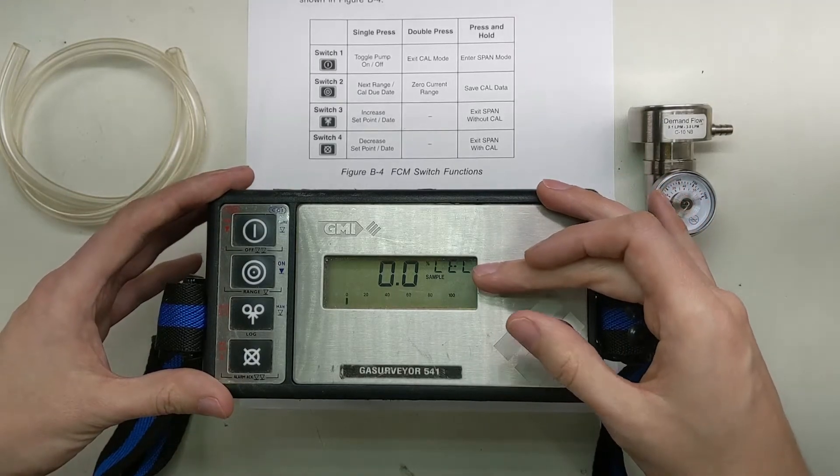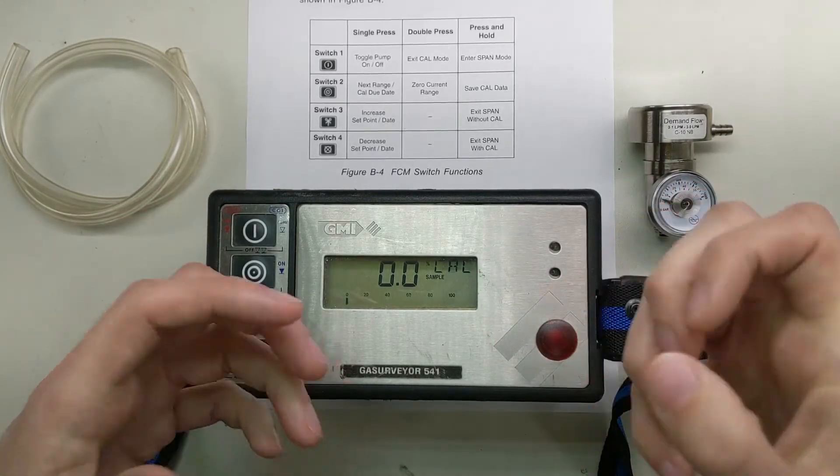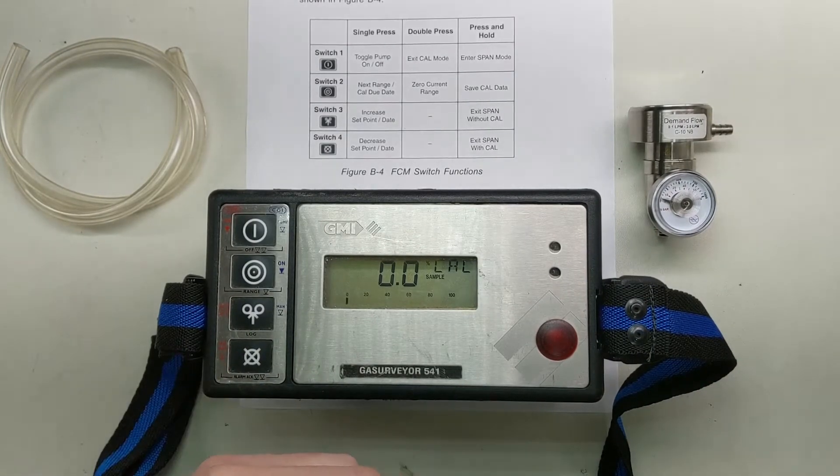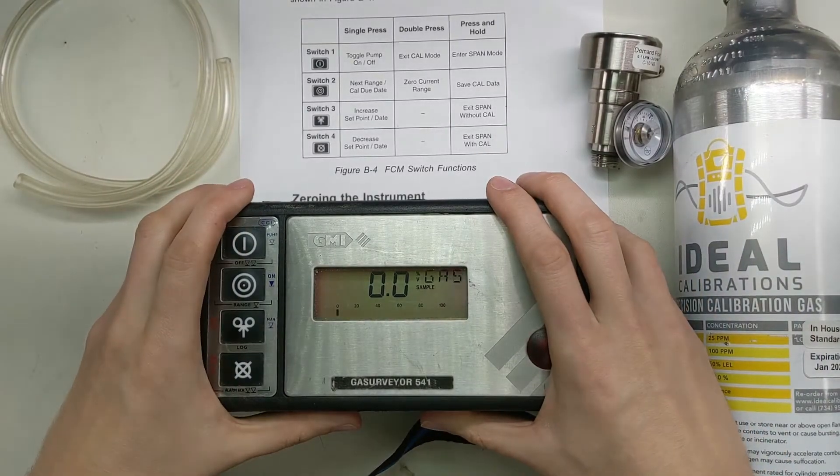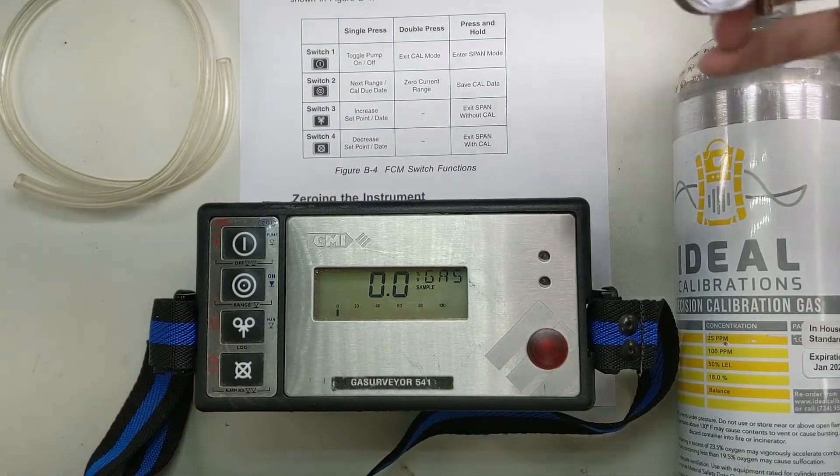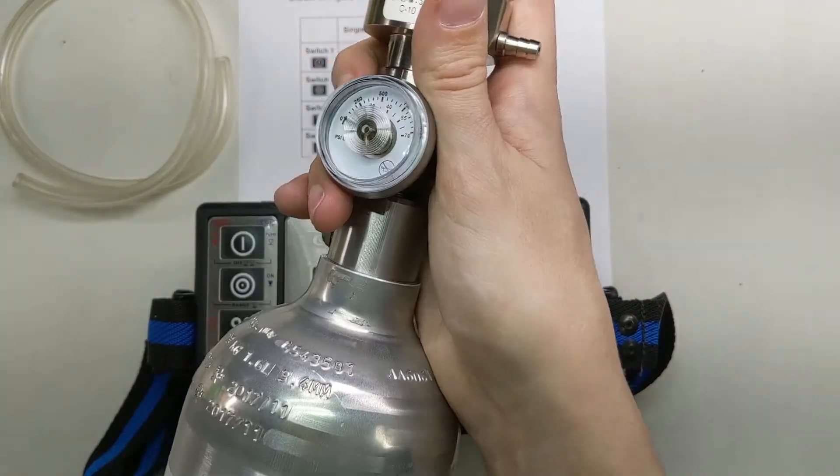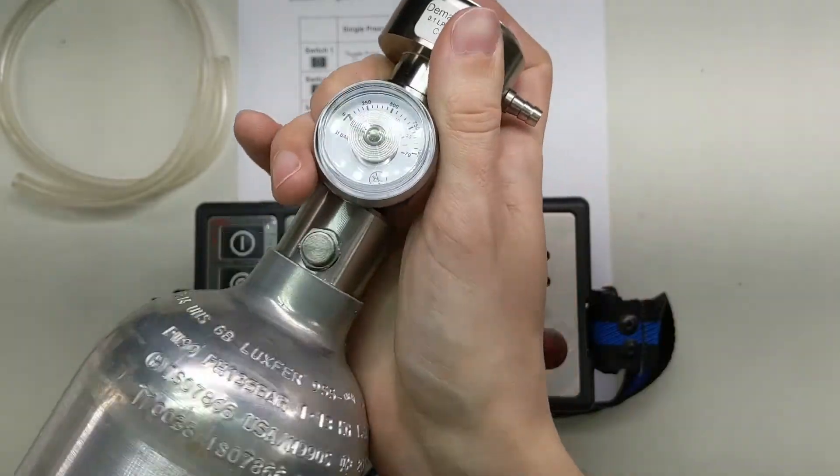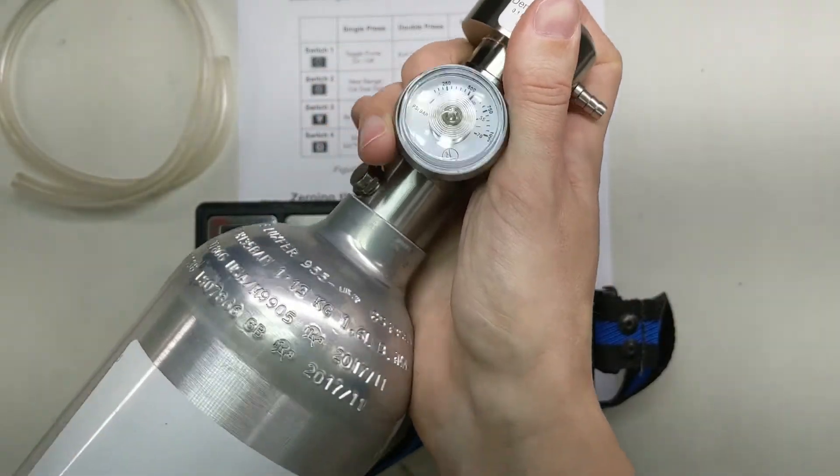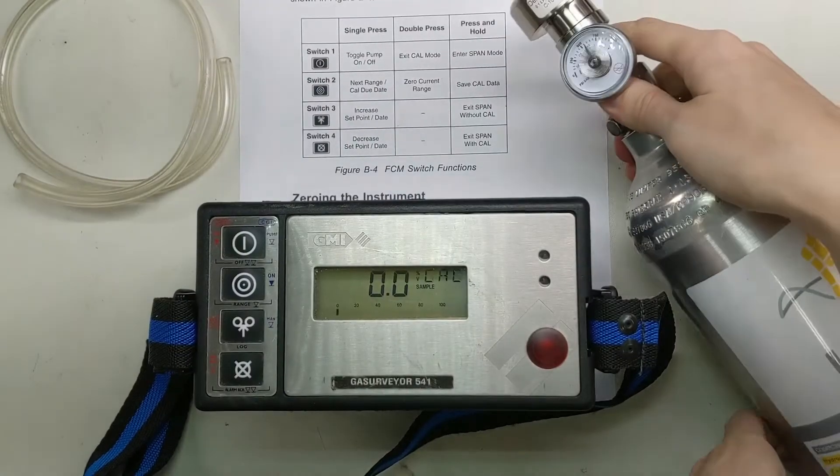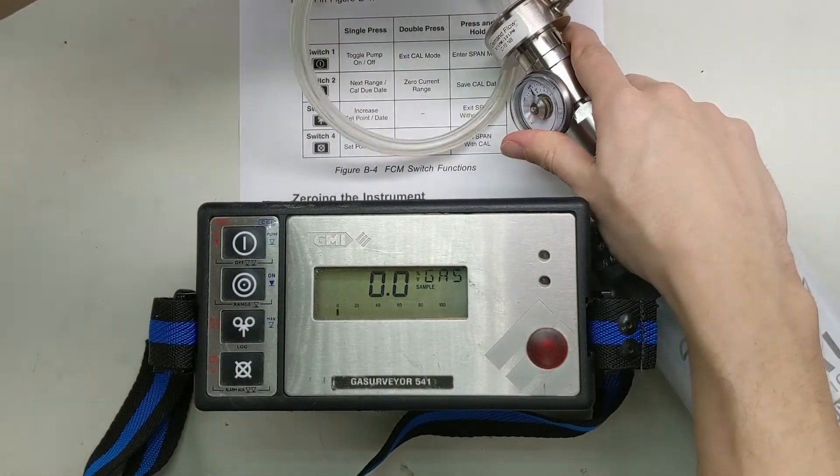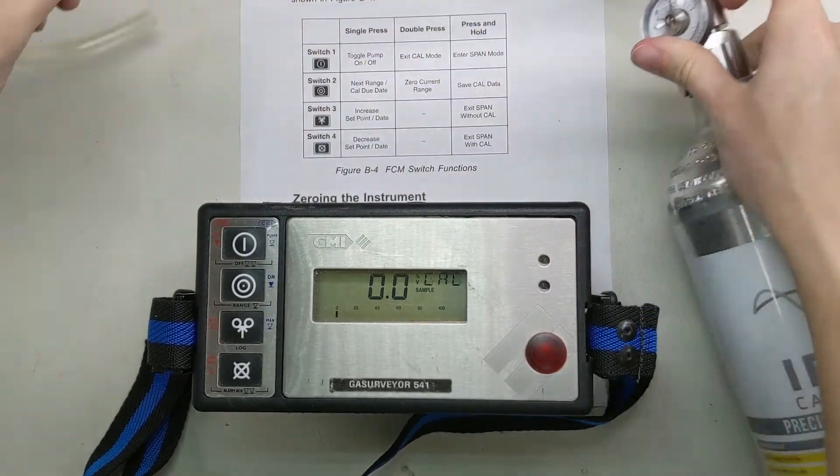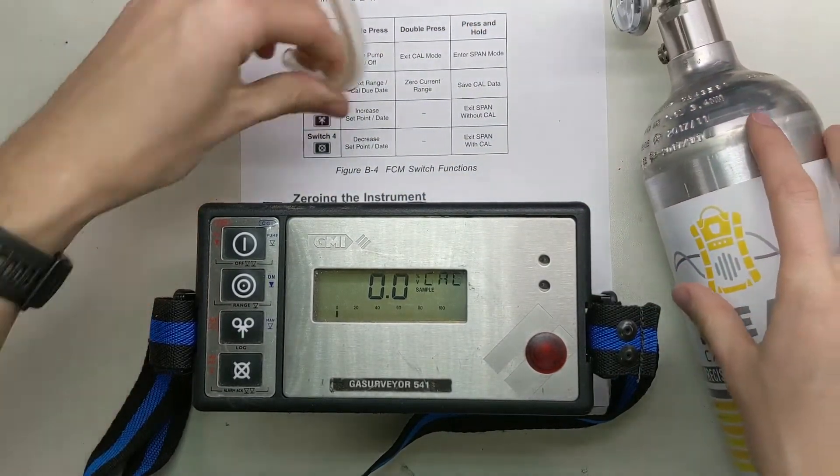Now we're back to the LEL mode. So now what we're going to do is go through and actually apply the gas cylinders to this. We're going to do our multi-gas first and then we're going to come back and do the methane. With the zero complete, we're going to grab our demand flow regulator. We're going to screw this into our cal gas cylinder. Our multi-gas cylinder is what we're going to start with. Now we grab our 3-16th of an inch tubing.